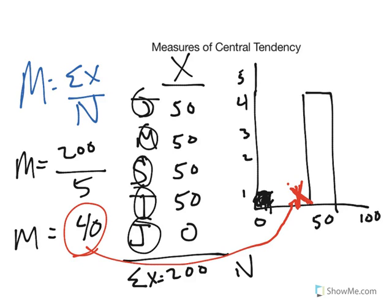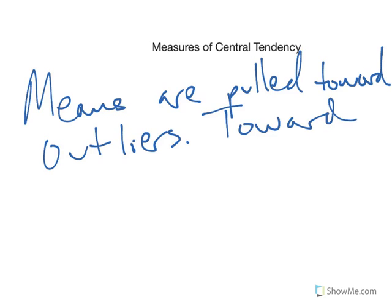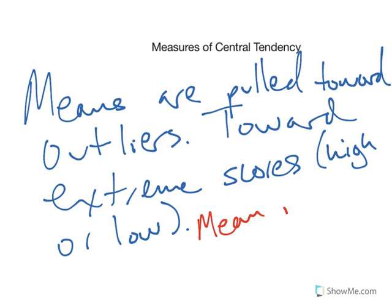So you can see that the outliers matter, which brings us to one of the most important rules about means. Means are pulled toward outliers, in other words, toward extreme scores. And they can be high scores or low scores. And we call this the technical term for it, as we say that the mean is sensitive to outliers.